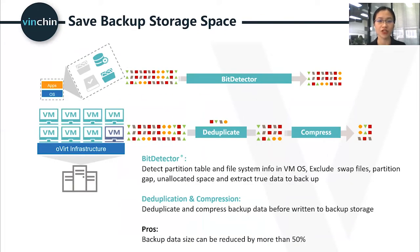We also developed functions to help users save backup storage space, like deduplication and compression before writing to backup storage, and a bit detector, which detects partition table and file system info inside each VM OS. It extracts actual data to backup and excludes swap files, partition space, and partition gaps, which are useless for users. In general, if all three functions are enabled, the backup data size can be reduced by at least 50%.